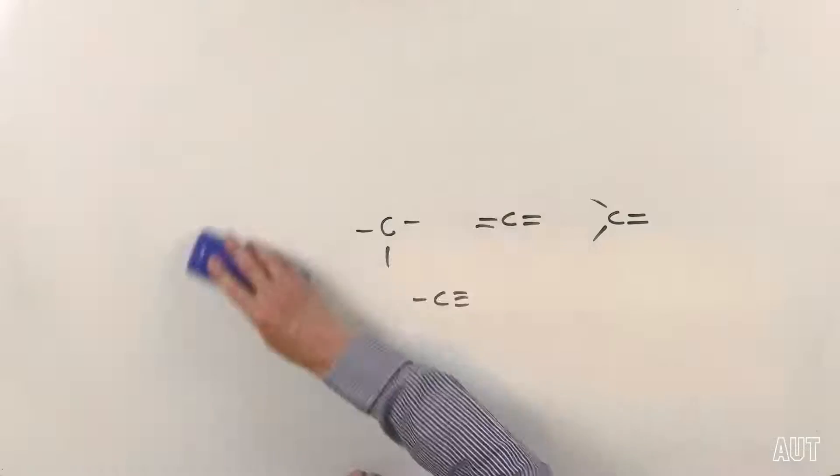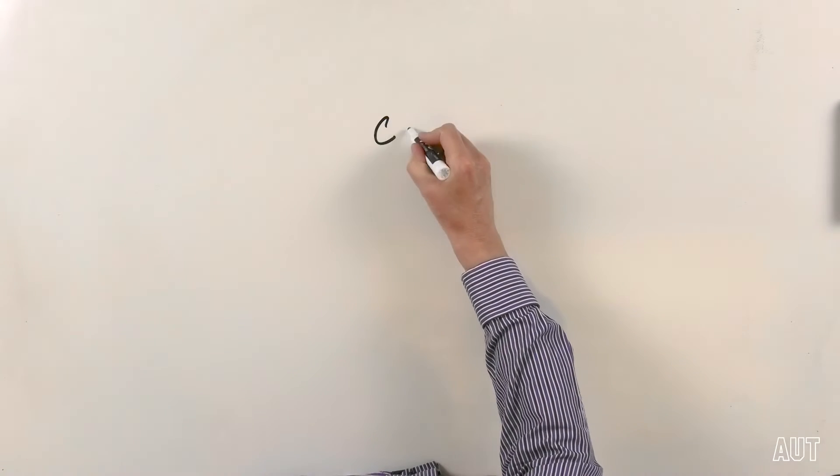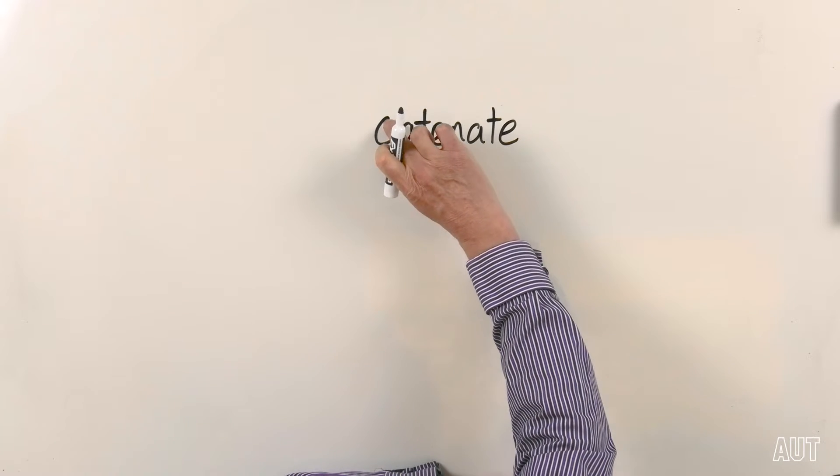The big thing with carbon - the thing that carbon can do absolutely better than any other element on the periodic table - is to catenate. Catenation is the ability of a particular type of atom to bond to another of the same type of atom, and so on and so on. What carbon can do that none of the other elements can really do is to form long, long chains of just carbons bonded to each other. It can also form rings of carbons of various sizes. The only other element that even comes close is probably boron, but that tends to form rings and platonic solids rather than chains.